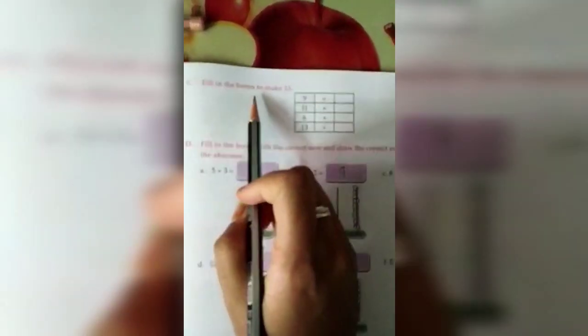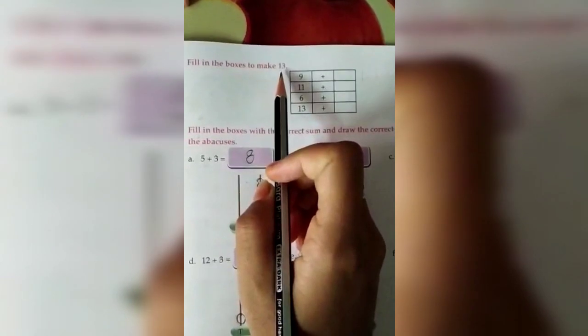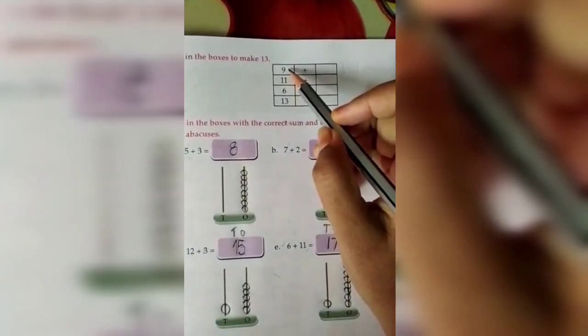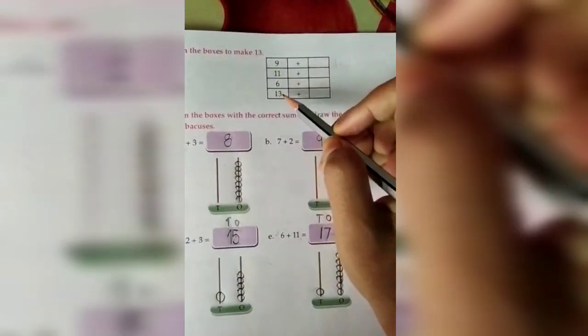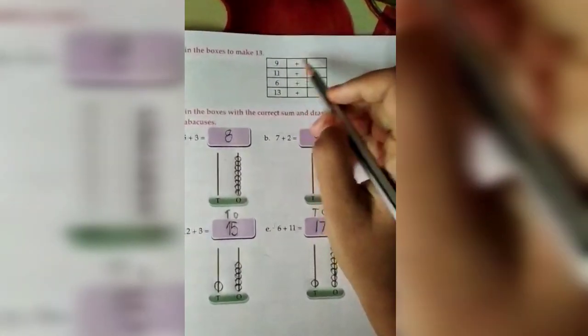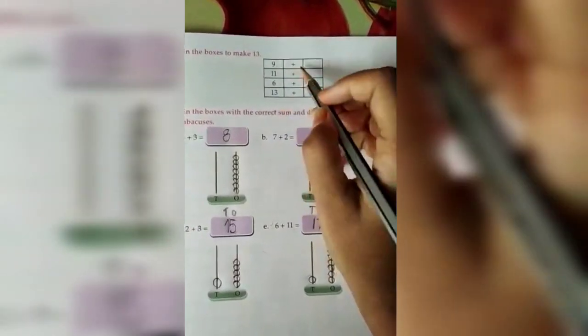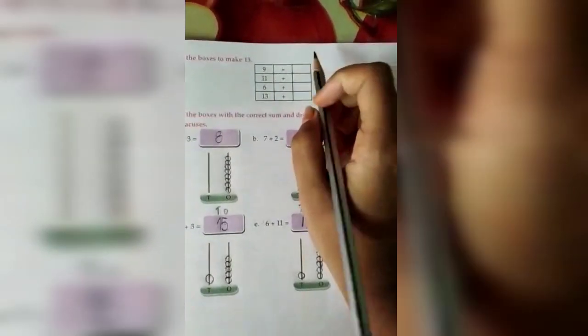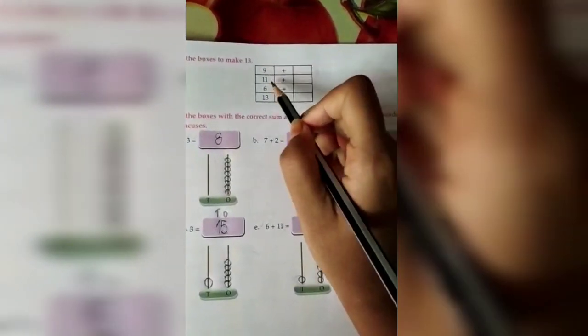C, fill in the boxes to make 13. Here you can see in each row one number is there. First is 9, then 11, then 6, then 13. After that plus sign is there. That means with all these numbers you have to add something. And how much will you add? You will add something to make 13.